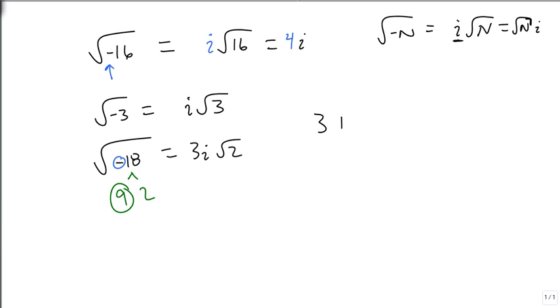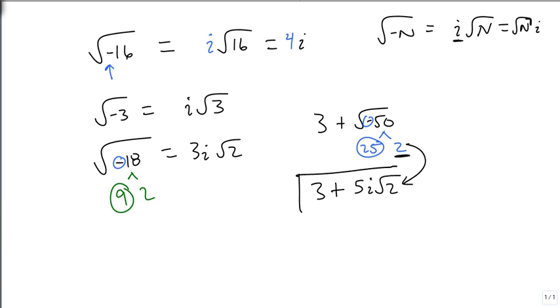What if we have 3 plus the square root of negative 50? Well, the negative becomes an i. And 50 is 25 and 2. And the 25 comes out of it. So, we get 3 plus the square root of 25 is 5i root 2, because we leave the root 2 inside. And that's how we find and how we evaluate the square roots of negative numbers.